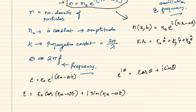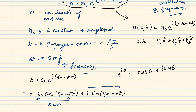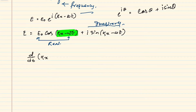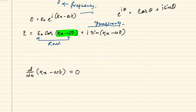Since particles physically exist, we will consider the real part of this equation. The real part is cos(kx minus omega t) and the other is the imaginary part. The term within the bracket represents the phase of the wave. The phase of the wave is constant and does not vary with time, so we write kx minus omega t equals constant.